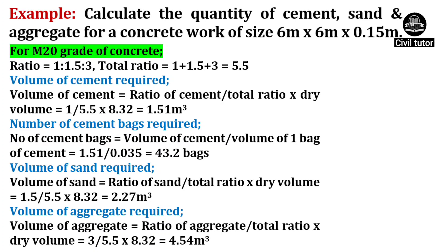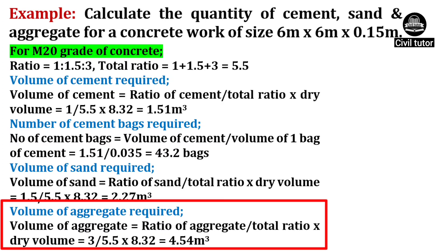Finally, the volume of aggregate will be equal to ratio of aggregate upon total ratio, multiplied by dry volume. Ratio of aggregate is taken as 3, total ratio is 5.5 and dry volume is 8.32. So on substituting these values, volume of aggregate will be equal to 4.54m³.